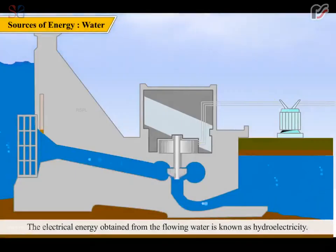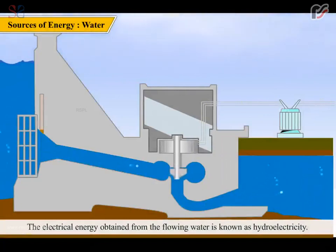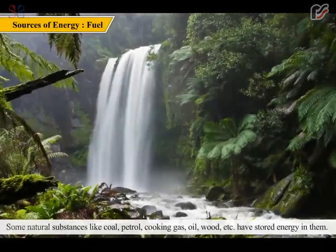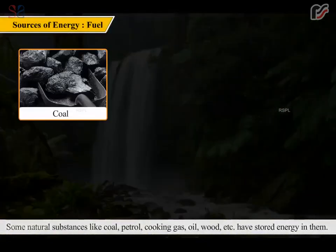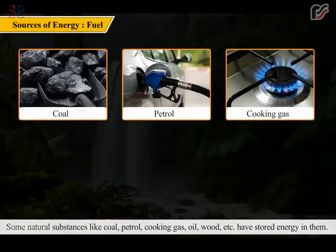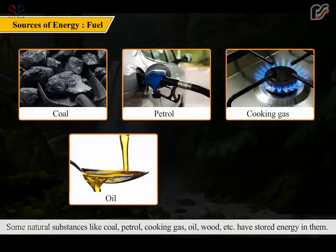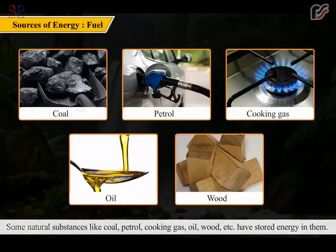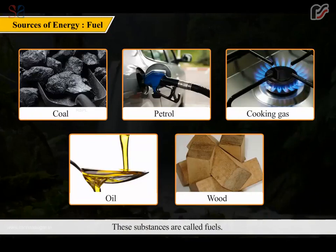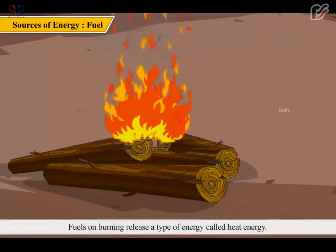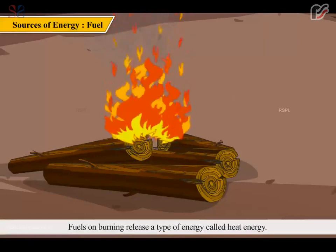The electrical energy obtained from flowing water is known as hydroelectricity. Some natural substances like coal, petrol, cooking gas, oil, wood, etc. have stored energy in them. These substances are called fuels. Fuels on burning release a type of energy called heat energy.